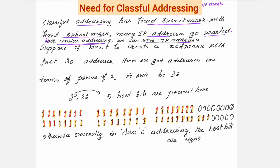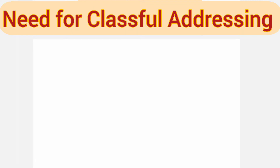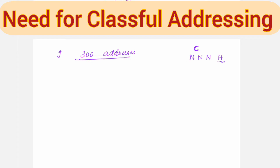To illustrate how to save IP addresses, consider this example: I want to form a network with 300 IP addresses. The first thing that comes to mind is to go for Class C. In Class C, the host part is 8 bits, so 2 to the power of 8 gives 256 IP addresses. But my requirement is 300, so Class C will not help.